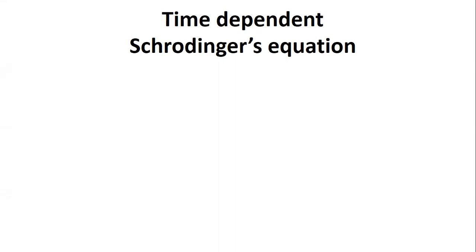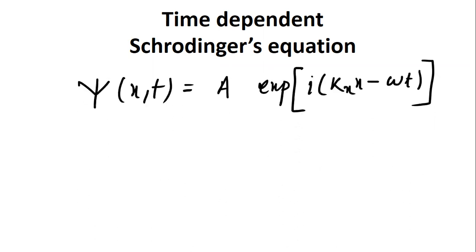Hello guys, today in this video we are going to discuss about the time-dependent Schrödinger equation. The wave function of a particle moving in the x direction is given as psi of x,t — psi represents the wave function, which is a function of x and t — and is equal to A e to the power i(k_x·x − ω·t).